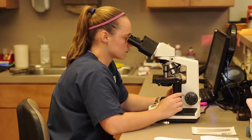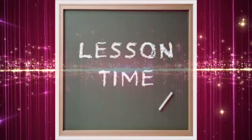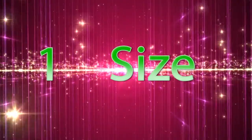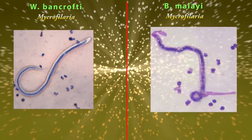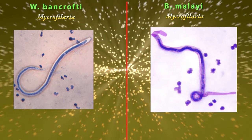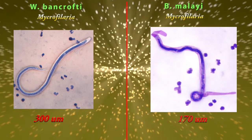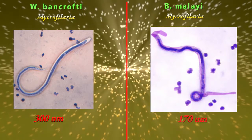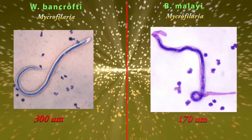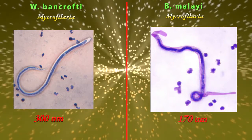They have plenty of similarities, but they also have differences. In the laboratory diagnostic stage, it is really important to identify both Wuchereria bancrofti and Brugia malayi separately. Difference number one: size. Wuchereria bancrofti is longer than Brugia malayi — bancrofti is about 300 micrometers long and Brugia malayi is about 170 micrometers long.